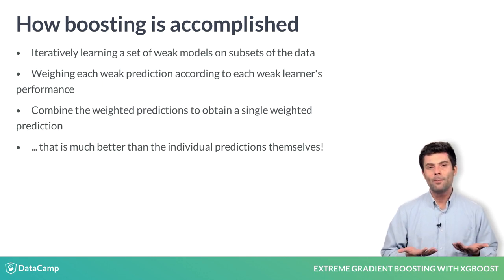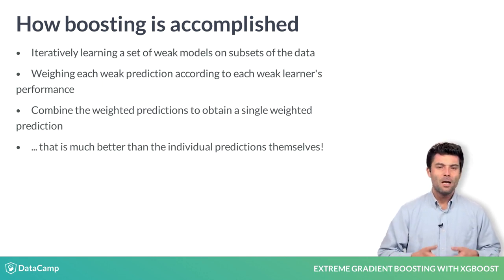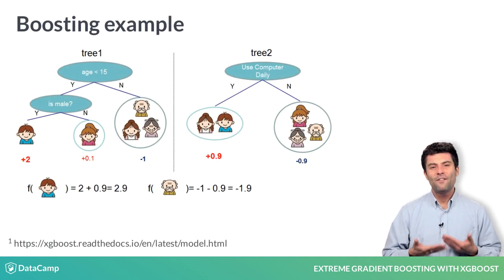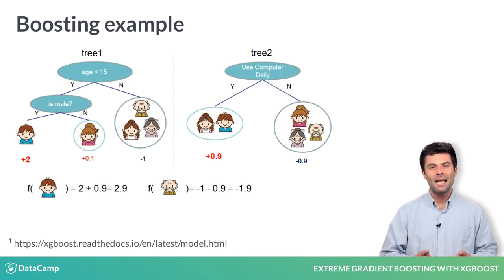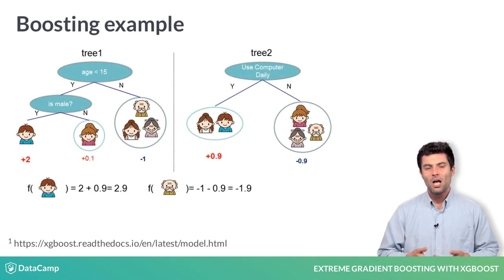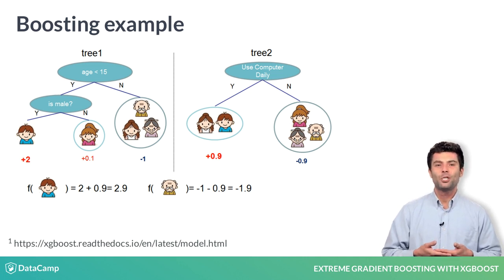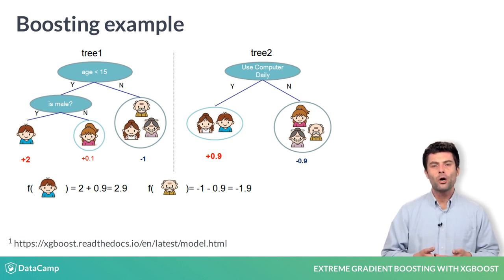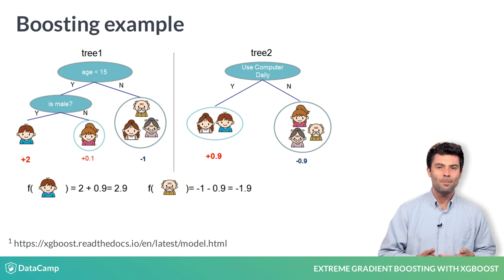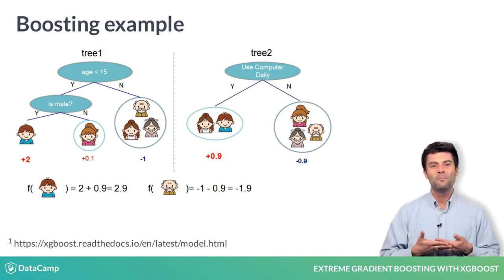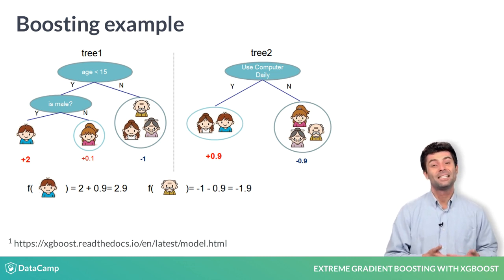It's kind of incredible that this works as well as it does. Here is a very basic example of boosting using two decision trees. This example comes from the XGBoost documentation and shows that given a specific example, each tree gives a different prediction score depending on the data it sees.